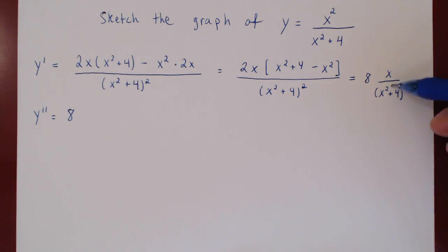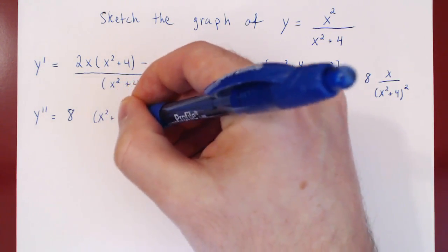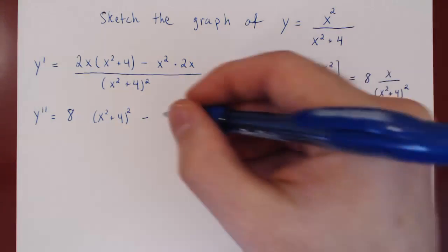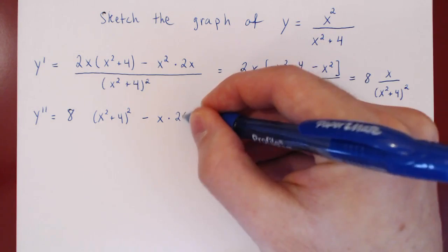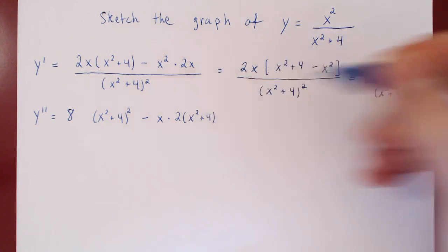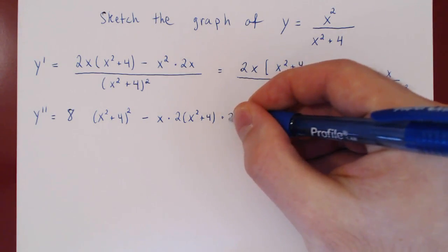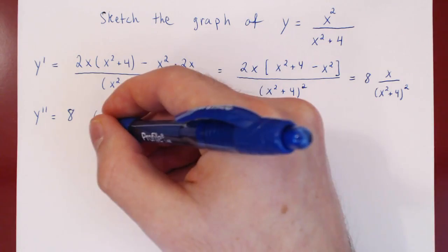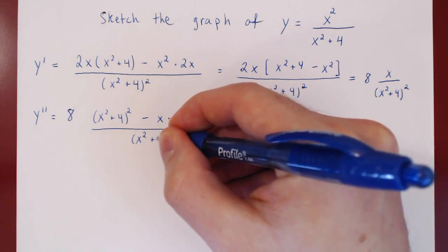So we have 8 times. Once again, we have a quotient, so we use the quotient rule. The derivative of x is 1, times x squared plus 4 squared, minus x times the derivative of that function. We use the chain rule: the outside function is the power of 2, giving us 2 times x squared plus 4, times the derivative of the argument, which is 2x, all over the fourth power of x squared plus 4.